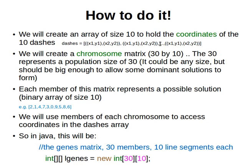We will create our population, the chromosome matrix. Let's assume we start with 30 elements, so 30 by 10. The 30 represents the population size of 30. It could be any size, really, but should be big enough to allow some dominant solutions to form. Each member of this matrix represents a possible solution.